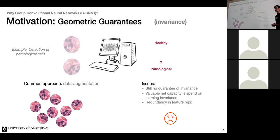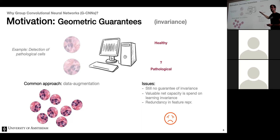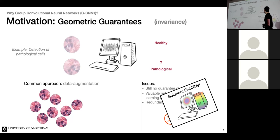Another issue is that valuable network capacity is spent learning geometric properties. Networks need to learn representations, and some of that capacity goes toward learning geometric structure. This leads to redundancy: in convolutional network filter visualizations, you often see rotated copies of the same feature — an edge detector in one orientation, another in a different orientation. We solve this via group convolutional neural networks.